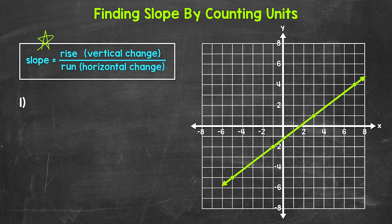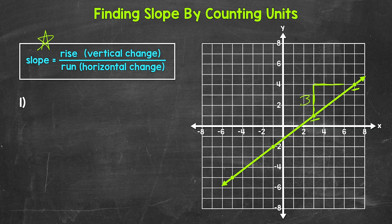When finding slope, we use any two points on the line — it doesn't matter which two; we will get the same slope. So let's use this point right here and this point right here. We need to figure out how far up and how far over we go between these two points. We're going to move from the left point to the right point. We go up one unit, two units, three units to align with the other point — that's our rise, the vertical change. Then we go over one unit, two units, three units, four units to get to the other point, so that's our run, the horizontal change.